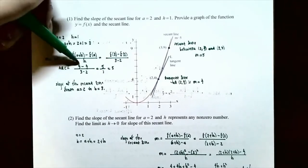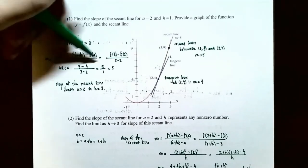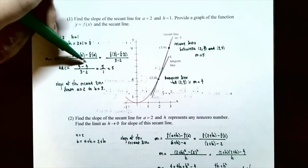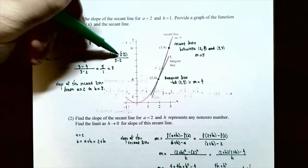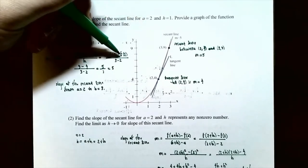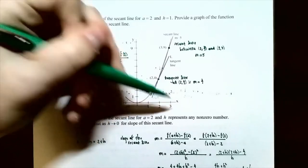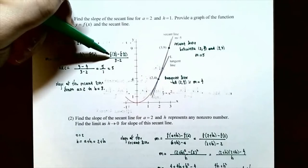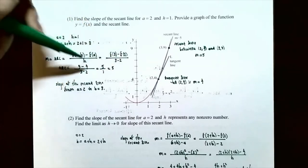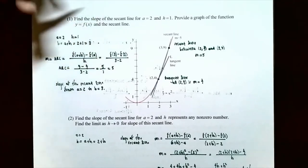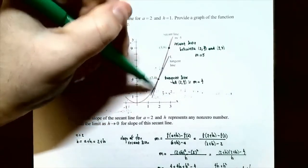We calculate the slope of the secant line using the average rate of change — the difference quotient. F(A+H) − F(A) divided by H gives us F(3) − F(2) divided by 3 − 2. F(3) = 3² = 9 and F(2) = 2² = 4, so the numerator is 9 − 4 = 5, and the denominator is 1. The slope of the secant line connecting (2, 4) and (3, 9) is 5.